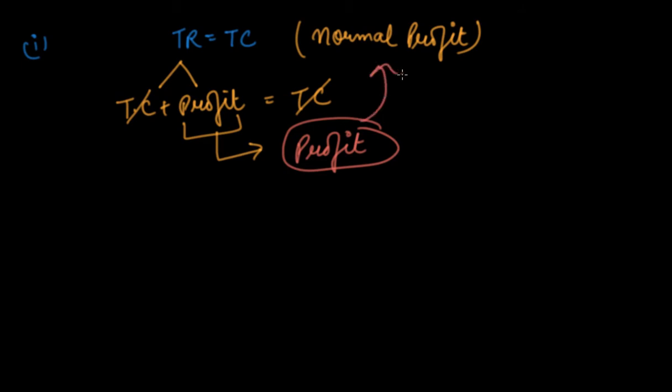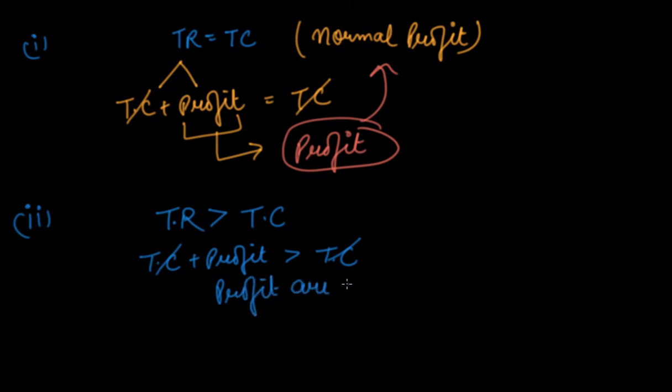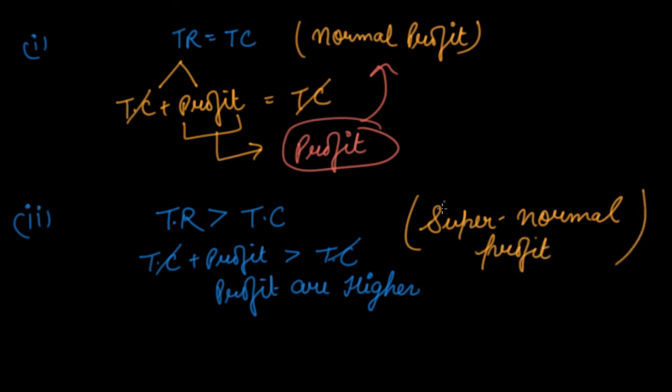So you will earn normal profit in this case. The second point we have is when your total revenue is greater than your total cost, which means your total cost plus profit are greater than total cost, right? Which means your profits are higher than what actually it should be. So this is a situation where you earn super normal profit, which means a profit above the normal. What you call it as super normal profit or abnormal profit.